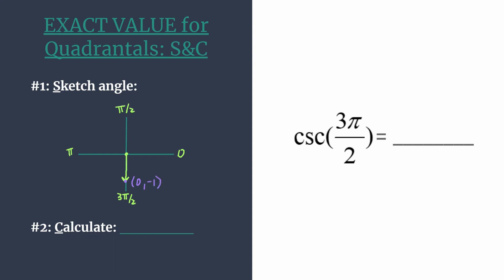Now we can calculate our trig ratio. The cosecant of an angle on the unit circle is simply the reciprocal of the sine, and sine is the y-coordinate on the unit circle. So our cosecant ratio is 1 divided by y. We have 1 divided by negative 1, and we found it — the cosecant of 3 pi over 2 is negative 1.